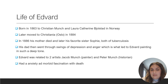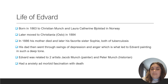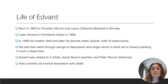Edvard was related to two different artists: Jacob Munch, who was a painter, and Peter Munch, who was a historian. Edvard was known to have a lot of anxiety, which led to a morbid fascination with death. It's possible that things that happened in his life — his mother dying and his sister dying — could have also led to this fascination.